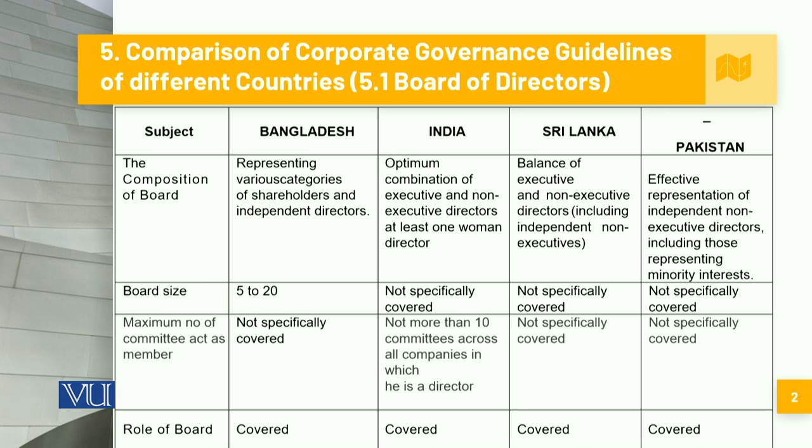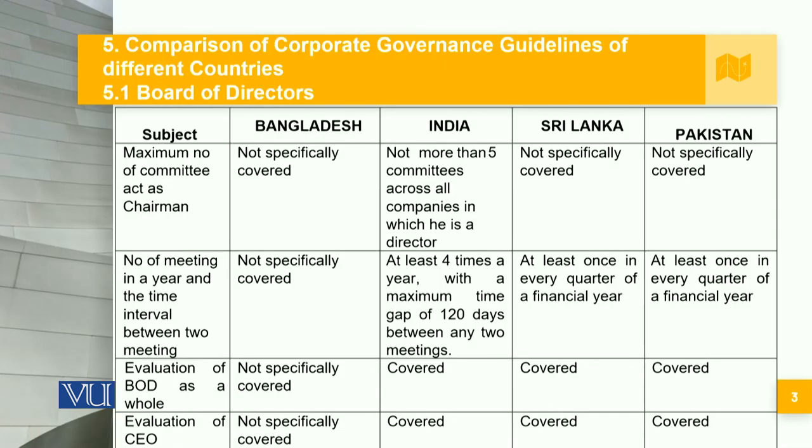When we look at the role of the board, then in all four countries it is covered and is properly enumerated within the code of governance. So we see that there is a great similarity between Bangladesh, India, Sri Lanka and Pakistan in the role of the board. Moving a little bit ahead, again talking about the comparison of the board of directors.